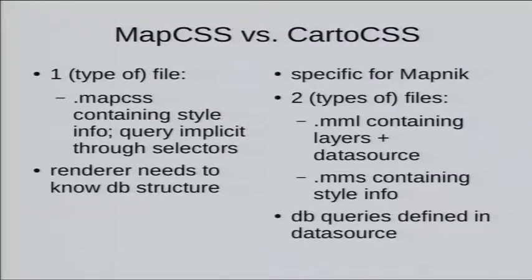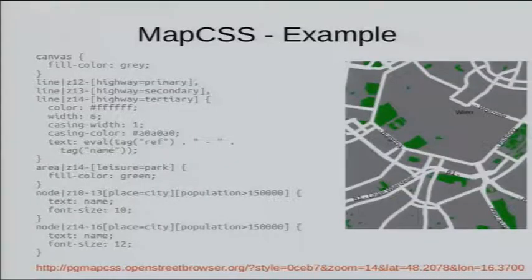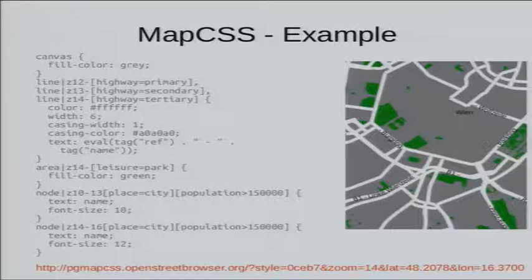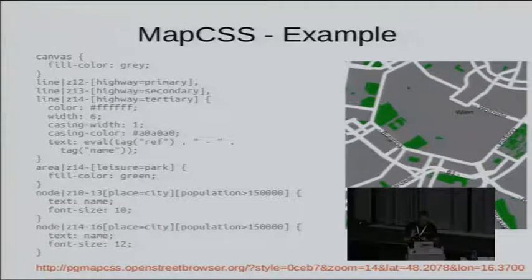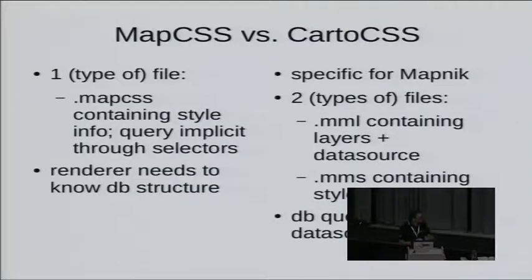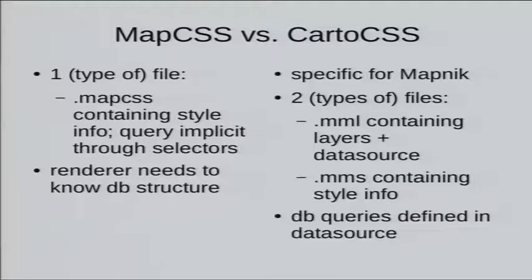In MapCSS, you just have one file. For example, a MapCSS file has a canvas — which is like the background, set to gray — then lines for highway primary, secondary, tertiary, which are shown from a specific zoom level (like 12 means from zoom level 12 on). You specify the standard color, the standard width, and how the text is connected. In MapCSS you just work with OpenStreetMap objects, and the renderer somehow gets the data from the database and applies the styles.